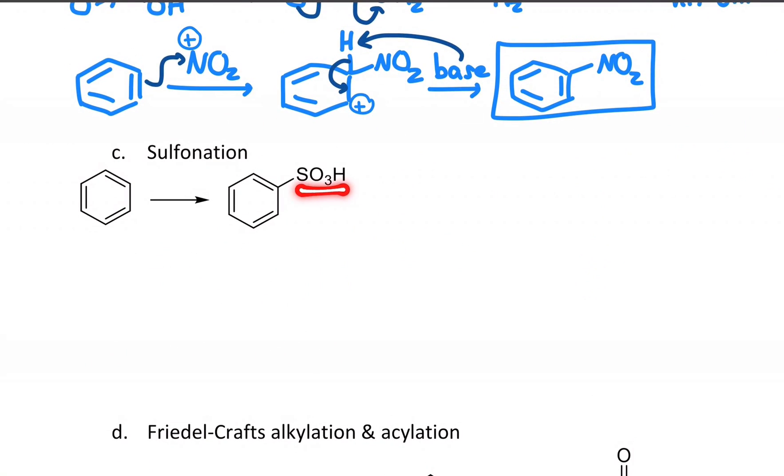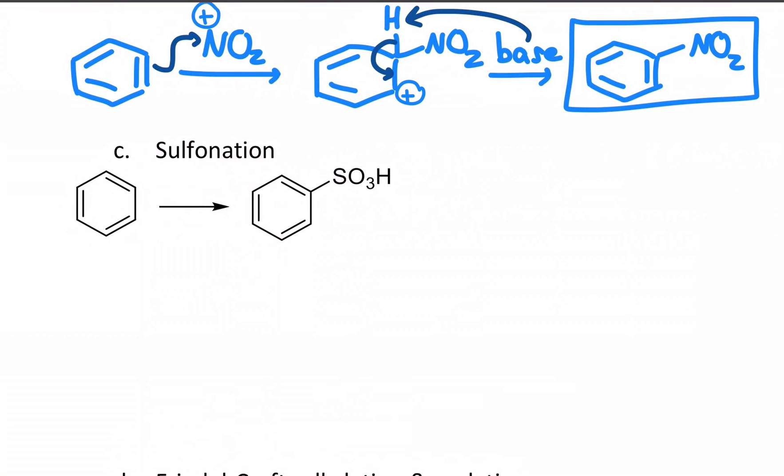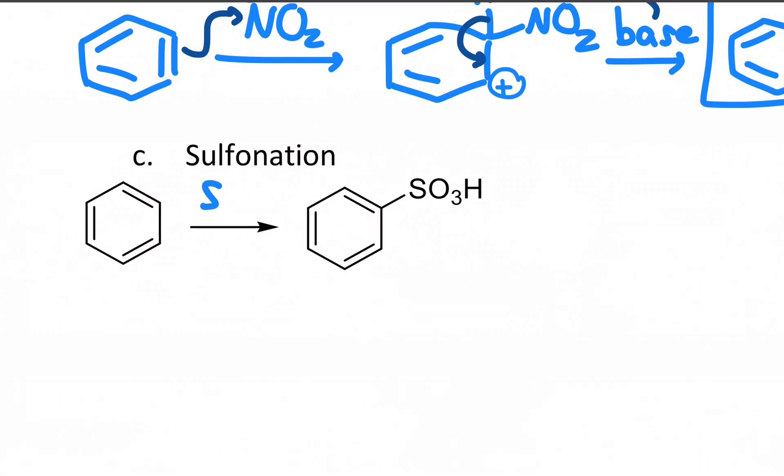This is a sulfonyl group, another electron withdrawing group that we'll see is very useful for syntheses because you can put it on the ring and you can also rather easily take it off the ring. So it can act as a blocking group. The reagents for this are sulfur trioxide, SO3, one of the most dangerous substances because when you mix it with water, it forms sulfuric acid, which is also a reagent in this reaction.